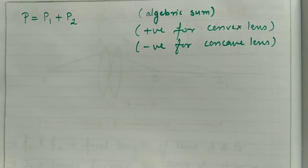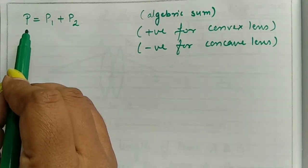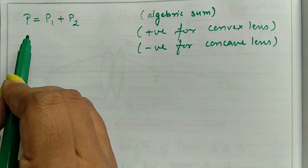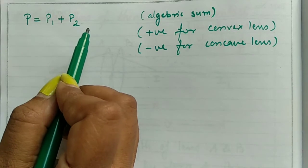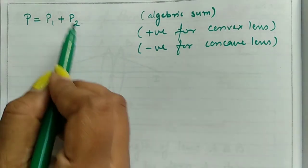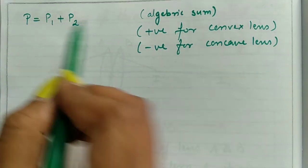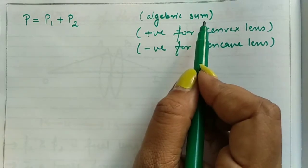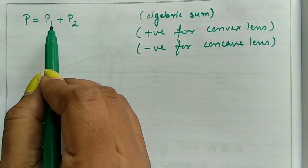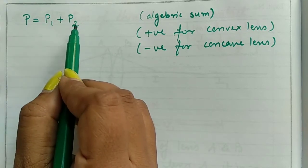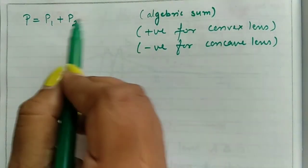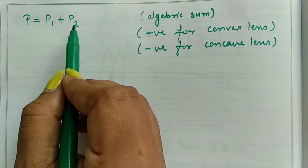And similarly, the power equation I get for resultant power of combination of N number of thin lenses will be P equals P1 plus P2 plus P3 plus P4 and so on. And this addition is actually the algebraic sum. Because suppose if this first lens is convex, then its power will be positive. And if the second lens is concave, then its power will be negative.